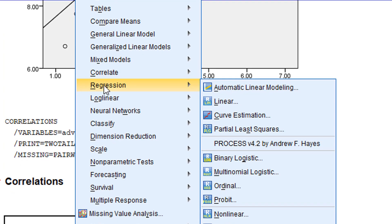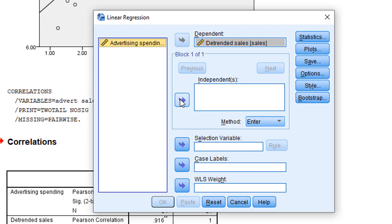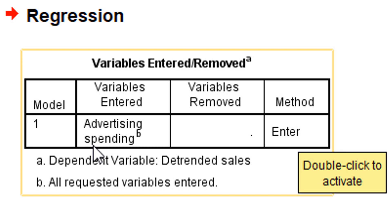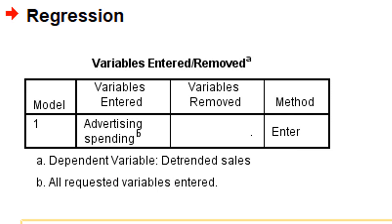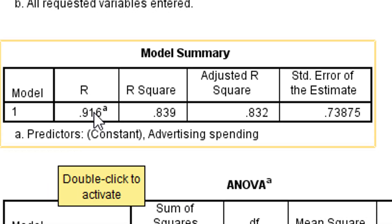Now let's see what regression analysis tells us. The initial findings confirm there is a relationship. We go to Analyze → Regression → Linear Regression. The dependent variable is sales, and advertising goes into the independent variable list. We click OK. The method used is the Enter method. The model summary gives us the R² value, which is 0.839. If we square the correlation coefficient 0.916, it becomes R² — the coefficient of determination.